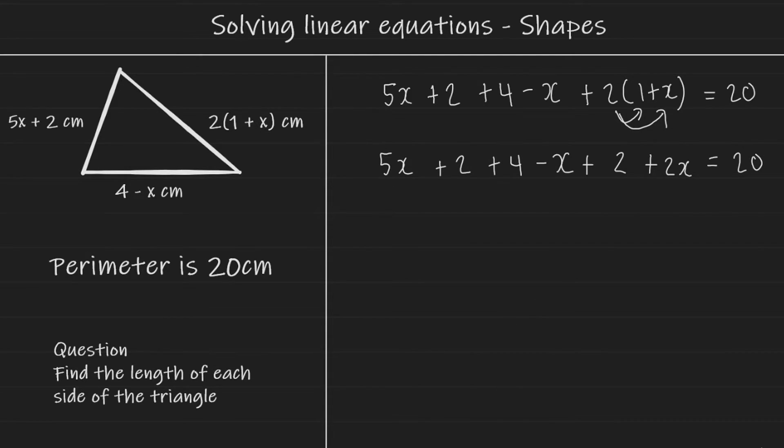Okay, now we can collect like terms. I'm going to first collect my x's. So it's going to be 5x minus x plus 2x. Collecting these gives us 6x. We have 5x minus x, which is 4x plus 2x. Yeah, that gives us 6x.